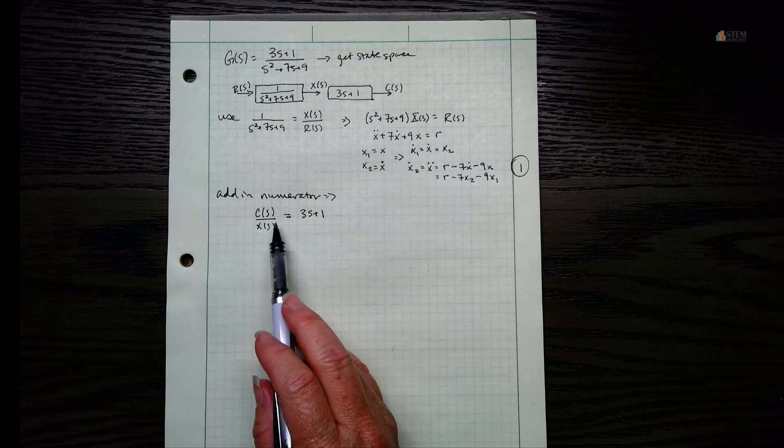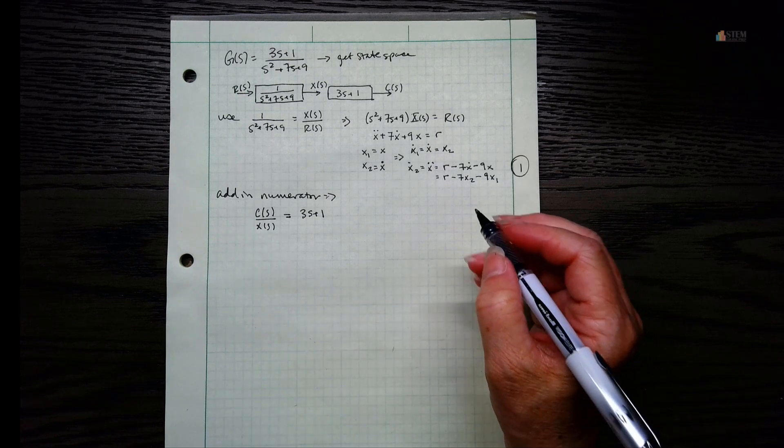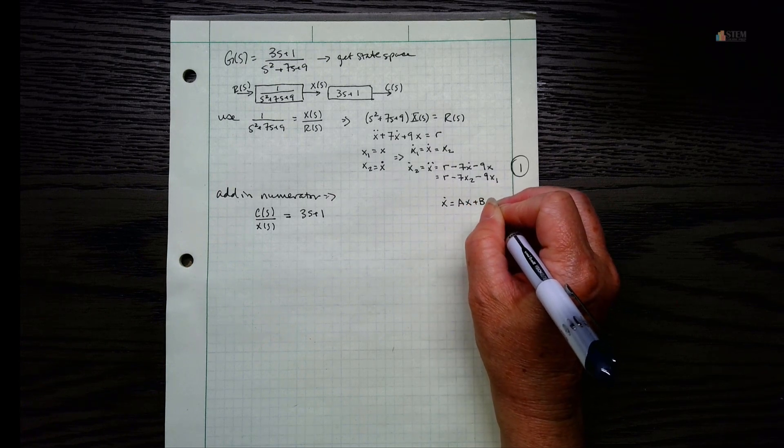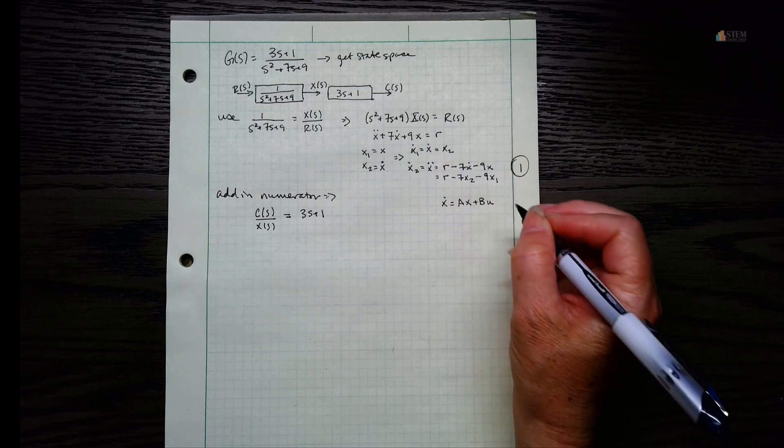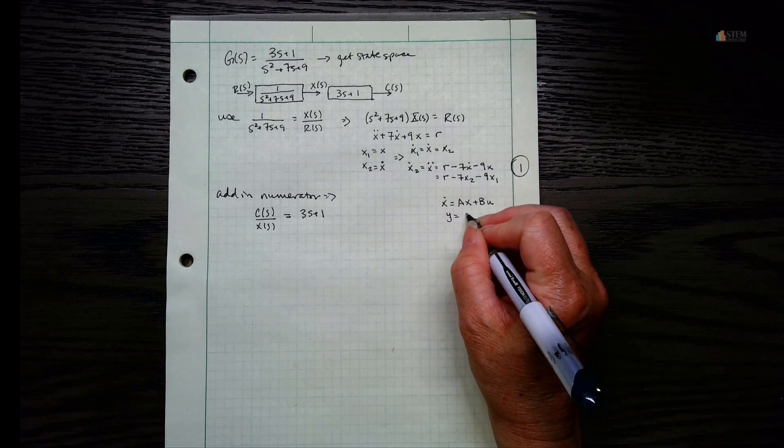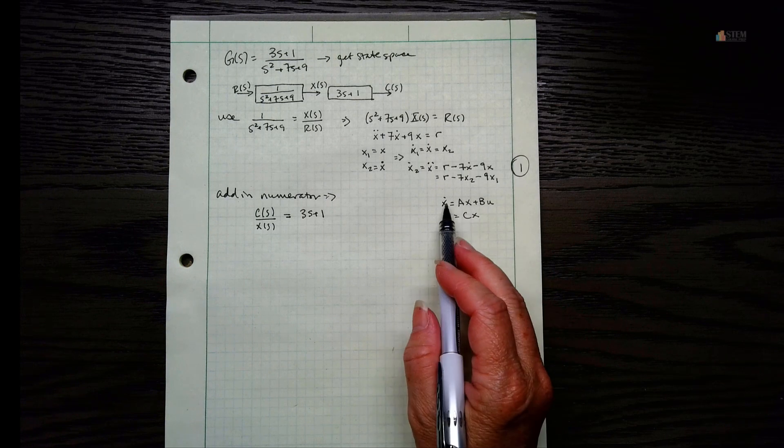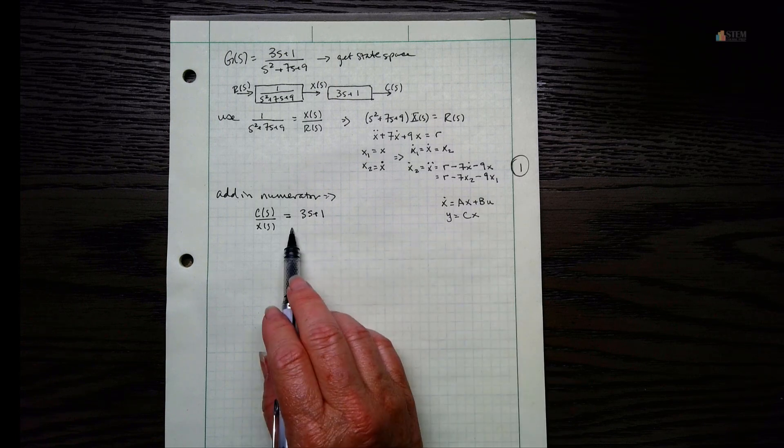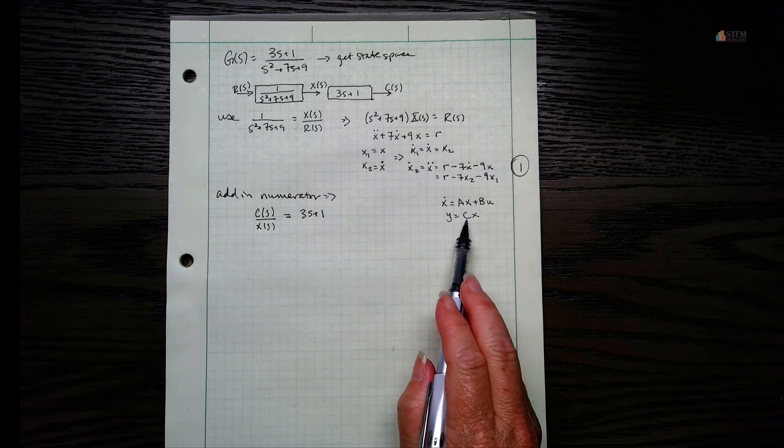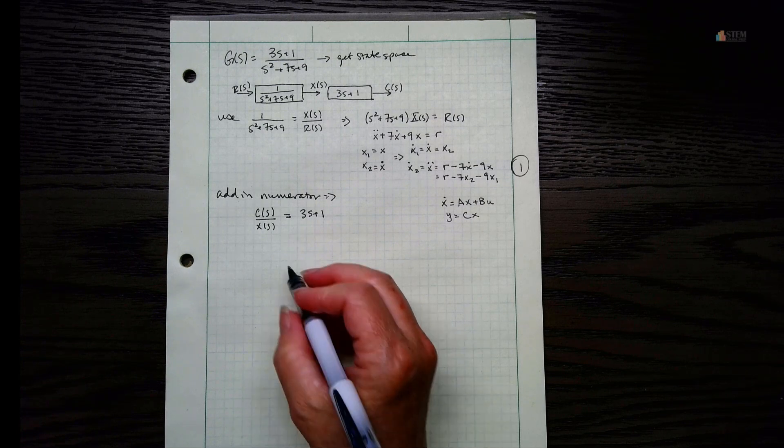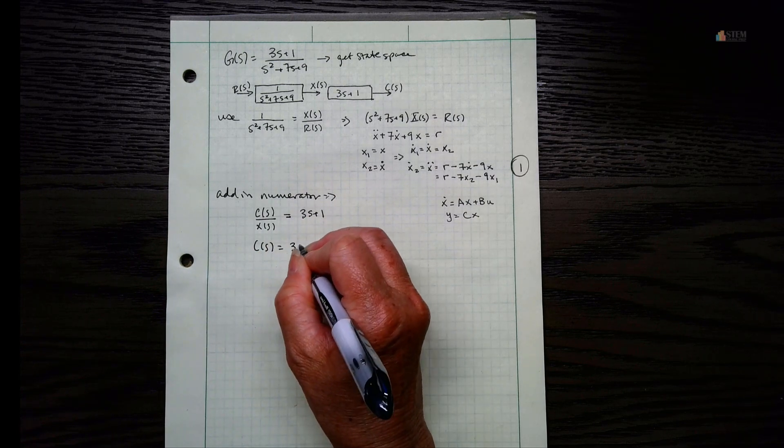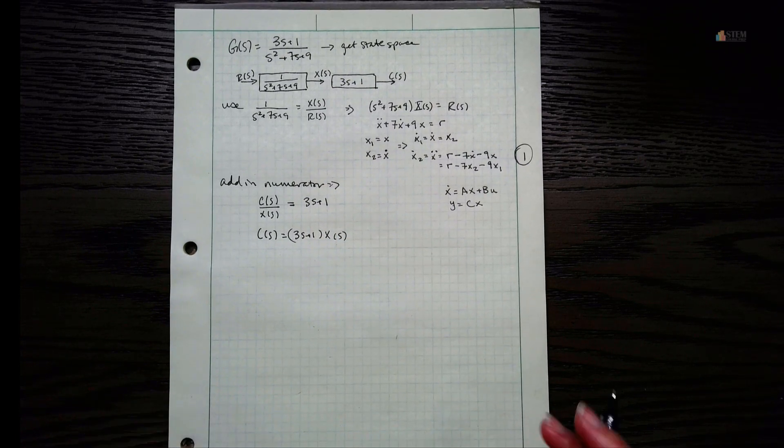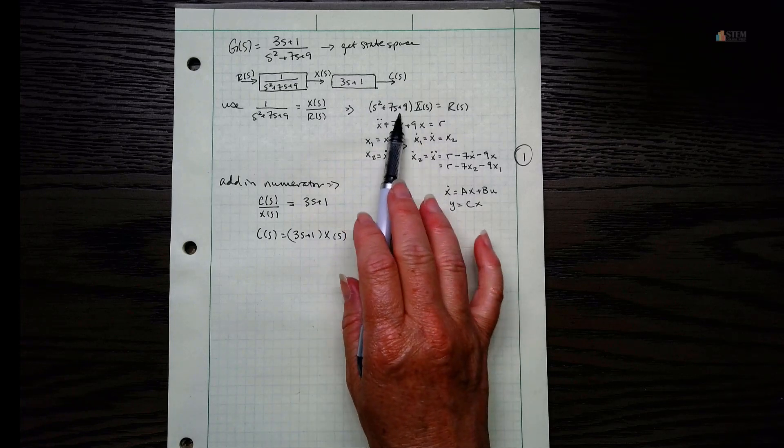And now I'm looking for C. Because if we remember from state space, X dot equals AX plus B times U - so this will be your input vector. And then for the output, we have Y equals C times X. So we're going to have this part here taken care of with 1, and then this part we're going to do right here. So I'm looking for C. C is here, so let's multiply. C of S is going to be 3S plus 1 times the X. And then just like what we did up here, we do the same thing.